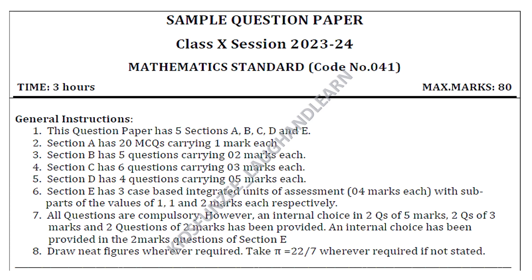All questions are compulsory. However, an internal choice is provided in 2 questions of 5 marks, 2 questions of 3 marks, and 2 questions of 2 marks. An internal choice has also been provided in the 2-mark questions of Section E. Draw neat figures wherever required and take the value of pi as 22/7 wherever required if not stated.